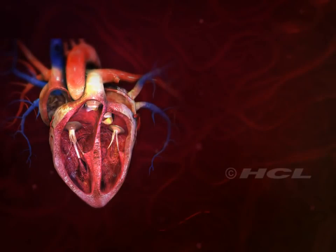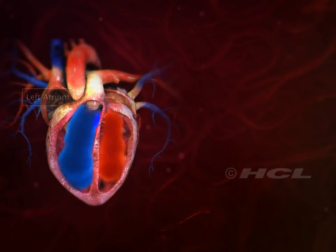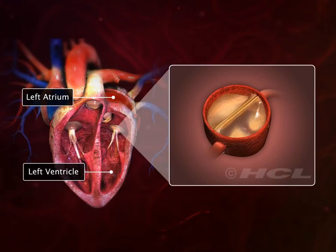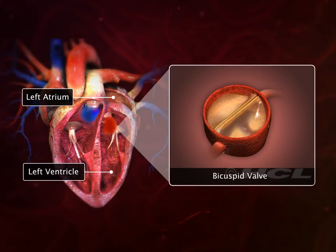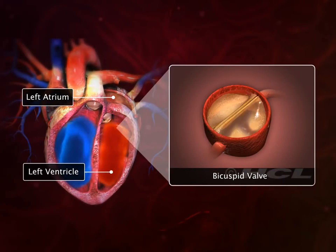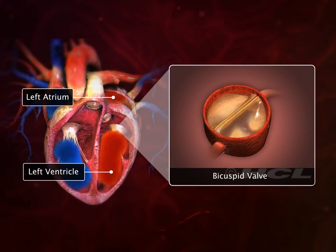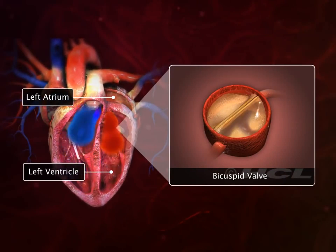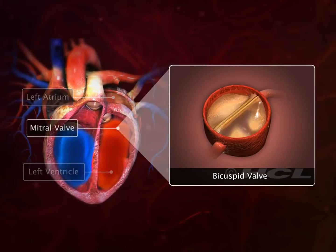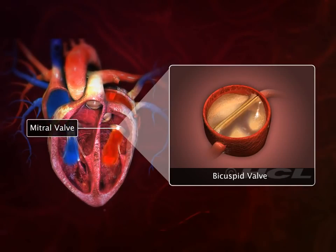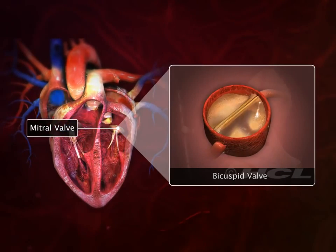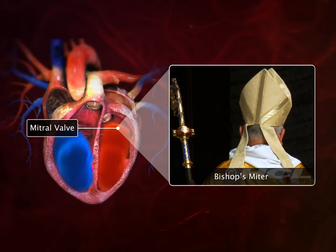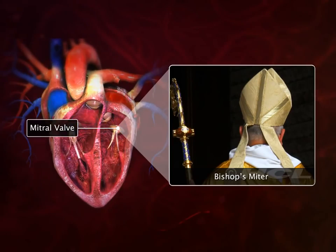On the other side, the left atrium and ventricle are connected through a bicuspid valve. The bicuspid valve is also called the mitral valve because of its resemblance to a bishop's two-sided mitre or hat.